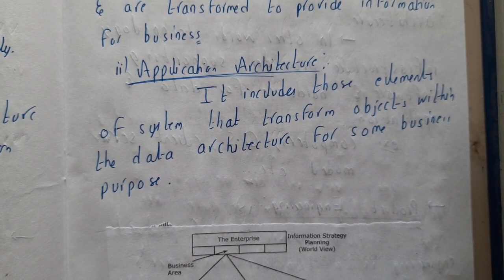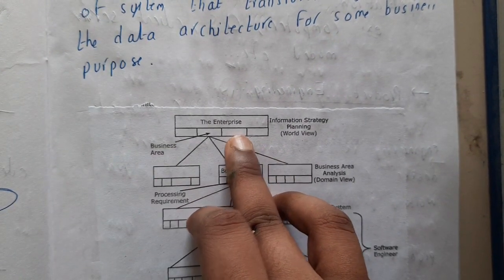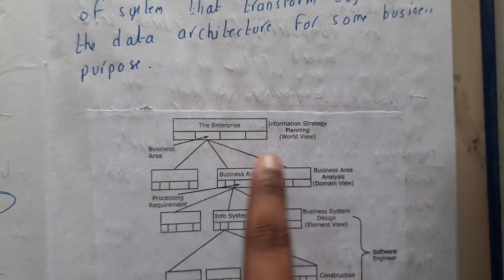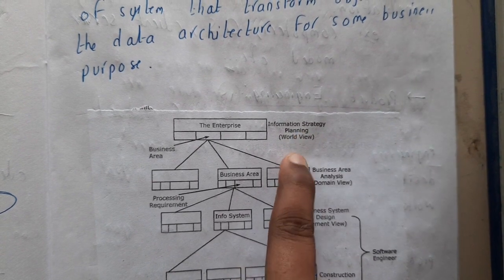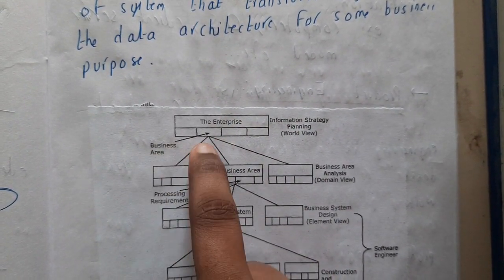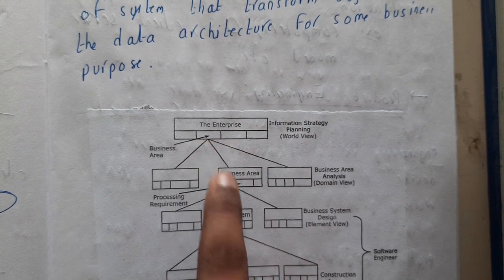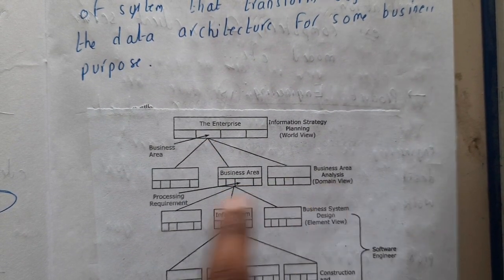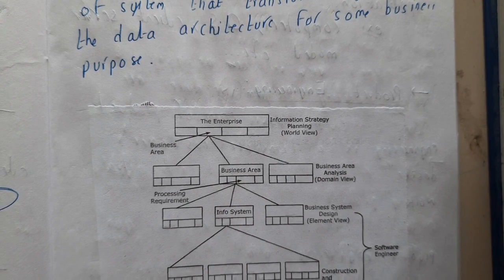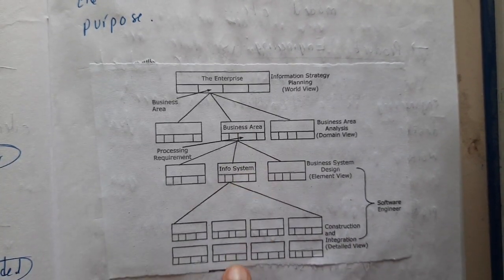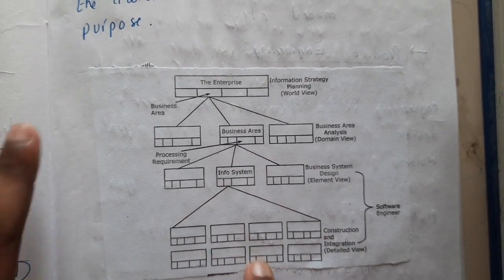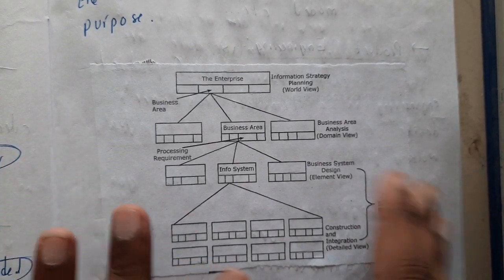Basically, here we are dividing the project into multiple sections. Your whole project — information strategy planning — is the world view. Within it, we have multiple business areas, from which you select one, which is the domain. From there you collect the information system and carry out the processes. I am giving just an overview of this topic.